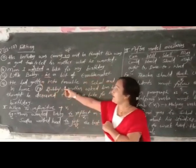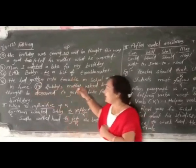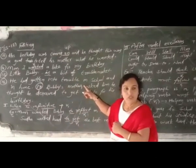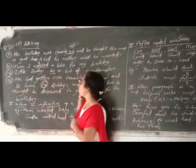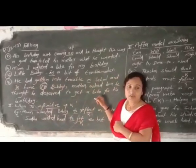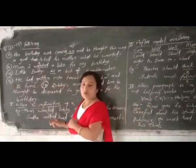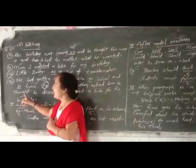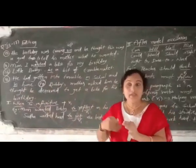And 'he had gotten into trouble in school and in home.' Here, observe the preposition. Not 'in school, in home' — both must use the preposition 'at.' It should be 'at school and at home.' You must not use 'in home.'